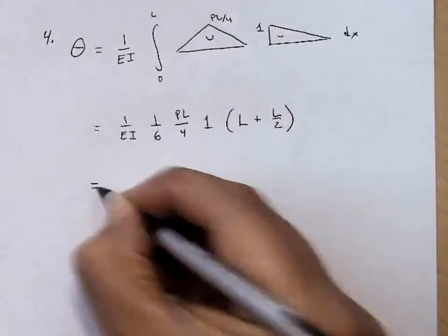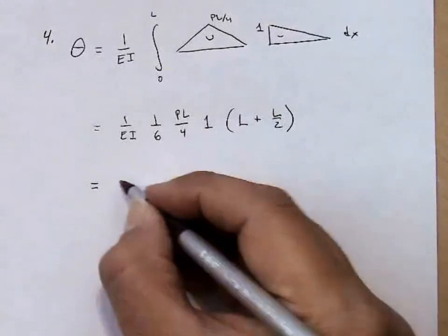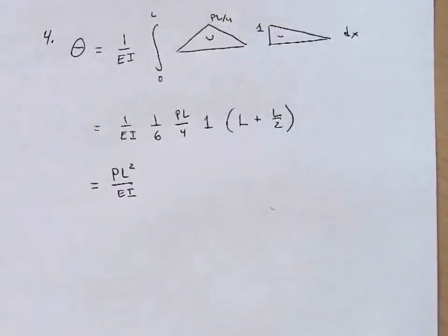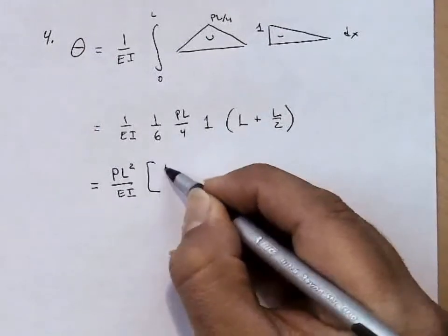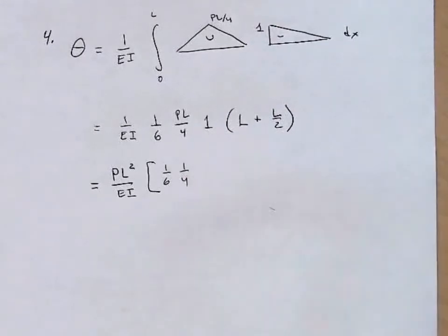We simply simplify it at this point. An L will factor out of here and a PL here. So I'm going to bring a PL squared over EI, and then just be left with the fractions. 1 sixth from that term, 1 quarter from that term, the 1.